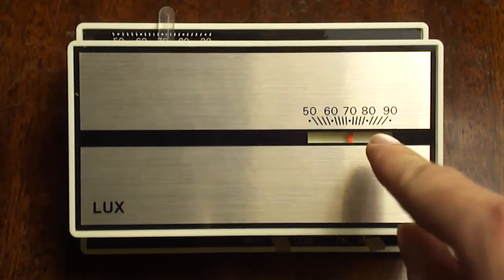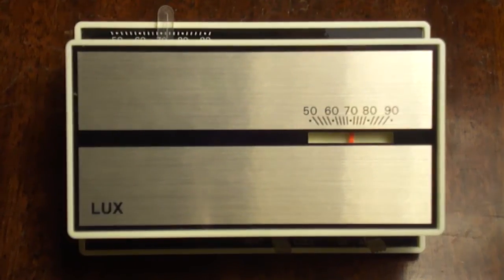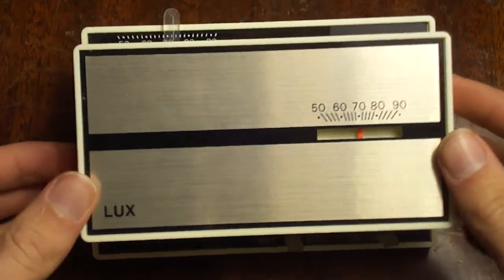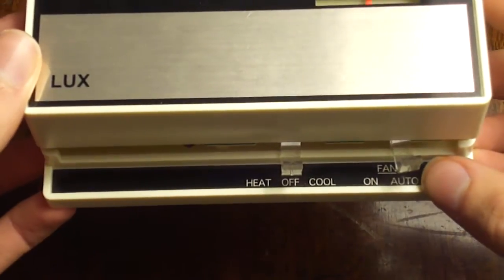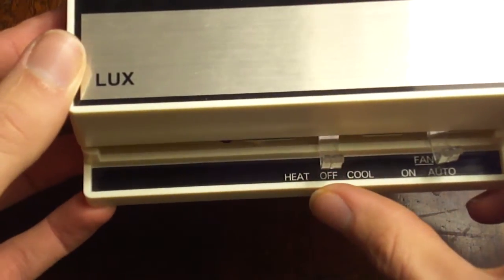Has your basic aneroid bi-metallic thermometer. You've got your basic controls on the bottom: fan on or automatic, and heat, off, and cool.